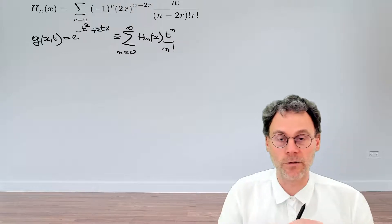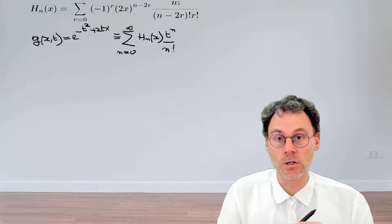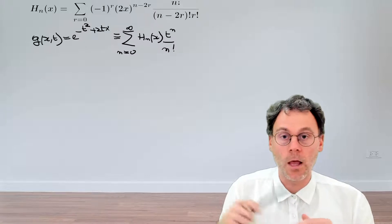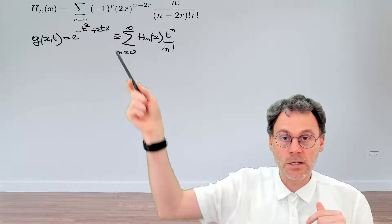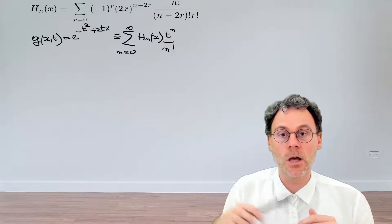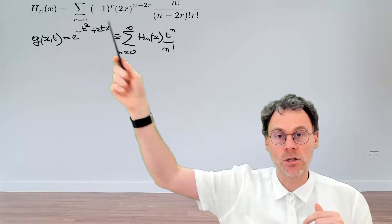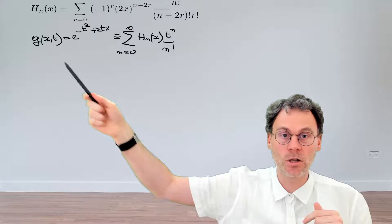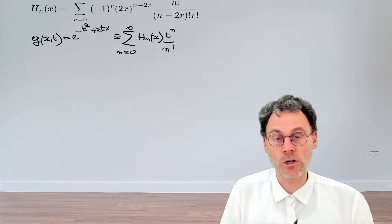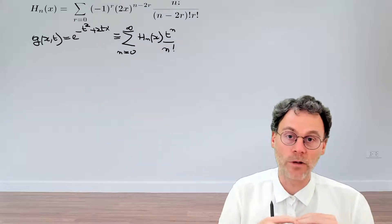So this is the definition of Hermite polynomials using a generating function. Now in order to have an explicit formula for the Hermite polynomials, we somehow need to change this equation here, this exponential, into a summation, into a series expansion where we have different powers of t.